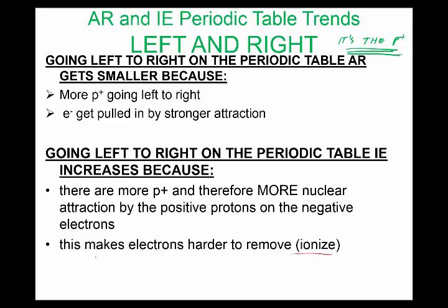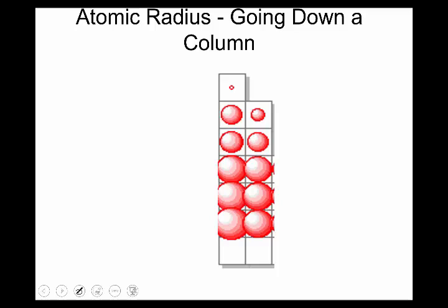So going left to right, it's the protons. And you'll see going up and down is, you'll be thinking that, so going up and down, you'll see that the trend, that the radius actually increases. So here's lithium, again, two rings, and this red line right there is showing the actual radius.